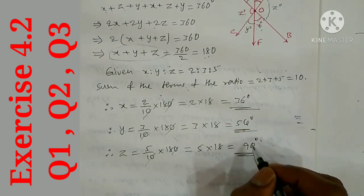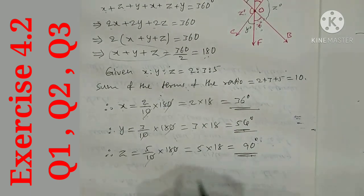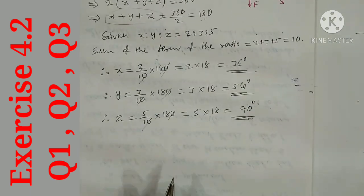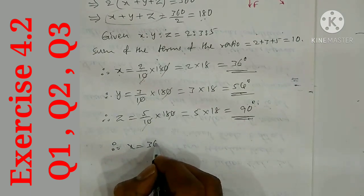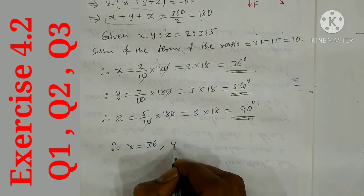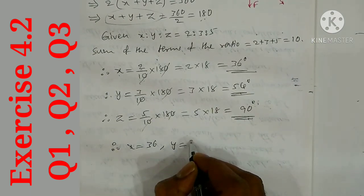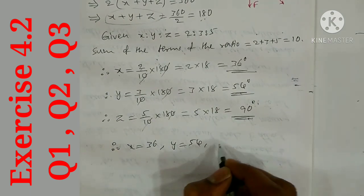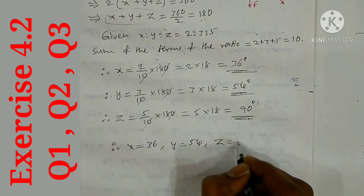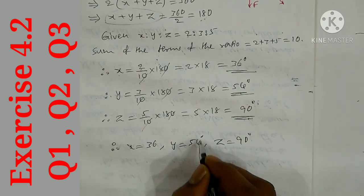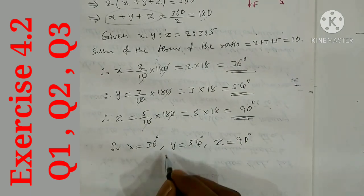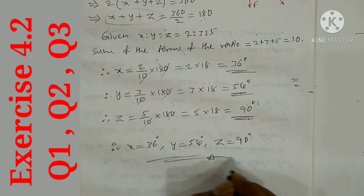Therefore, x = 36 degrees, y = 54 degrees, z = 90 degrees. This is the answer.